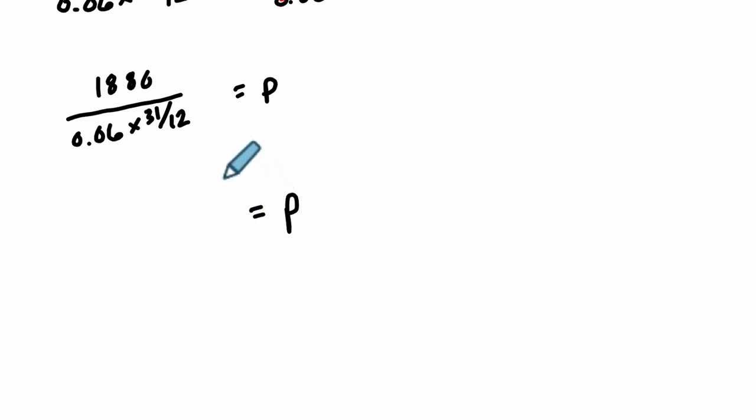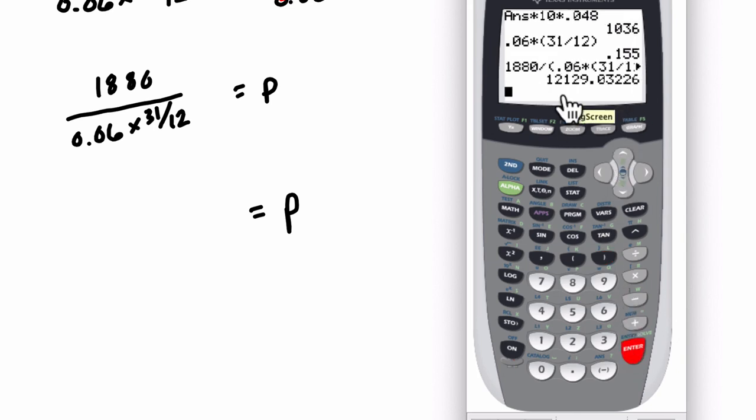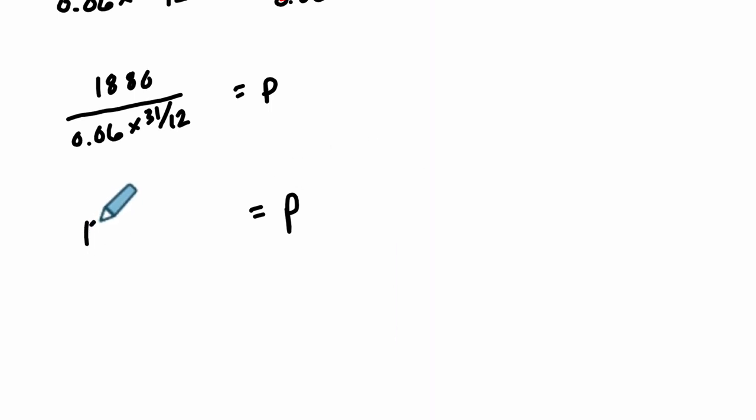So often you might skip from this step to here. Just solve for p. And what do we get? Let's do the math. Now when you do this division here, you want to be careful. You want to enter, say, 1880. And then when you divide by these two factors, make sure you put them in parentheses. Or make sure you calculate what they equal first, and then divide 1880 by that value. So, times, parentheses again for that fraction, 31 over 12. And then close those parentheses. We have two sets of parentheses there. And this is our principle. 12,129.03.